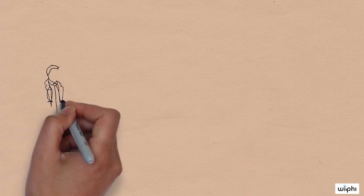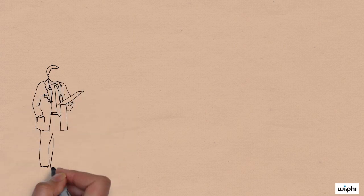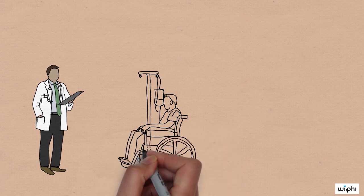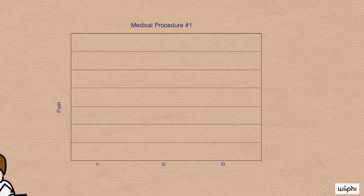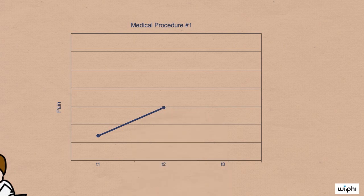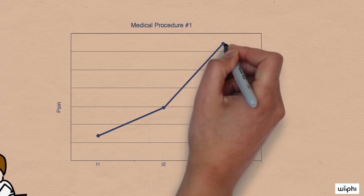Kahneman and colleagues wondered whether the same peak and end effect would work for people's memories in situations that we experience in the real world. They teamed up with doctors who were giving patients a painful medical procedure. Usually the procedure went like this. It started out as not so painful and gradually got more and more painful, ending at a moment of maximum pain.